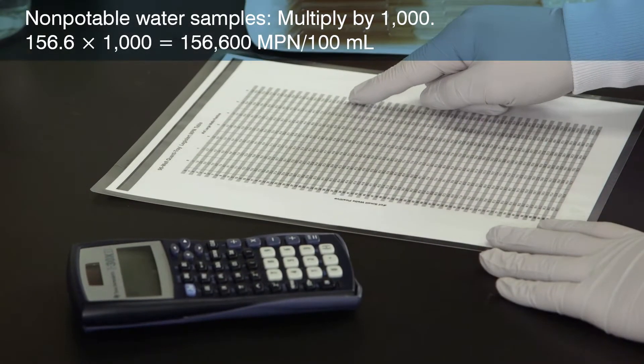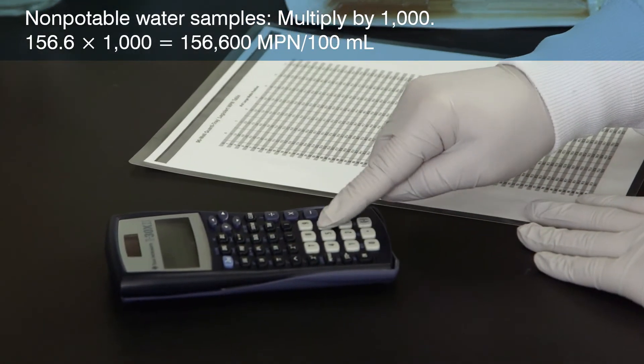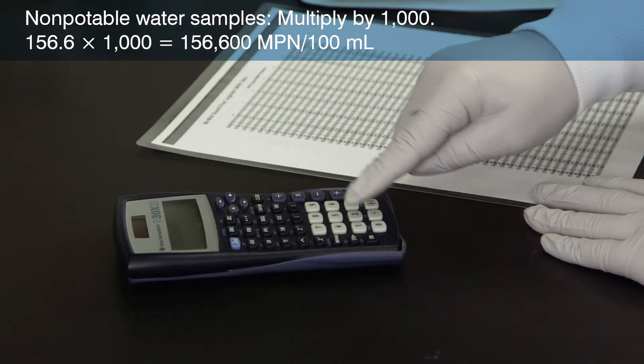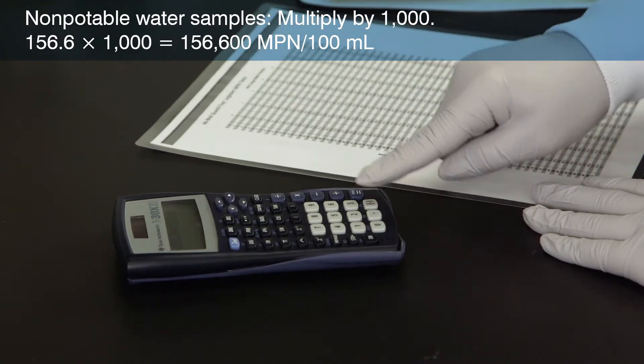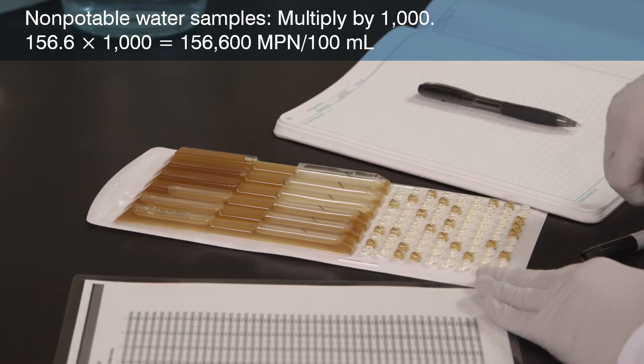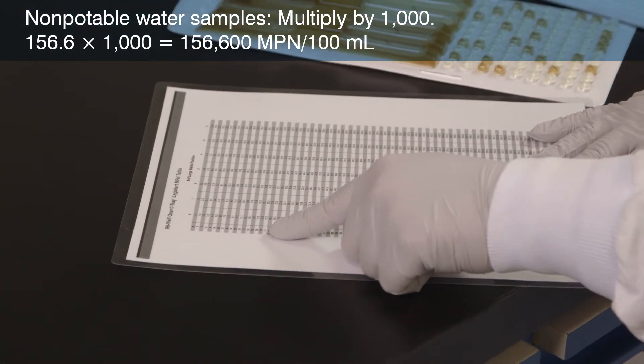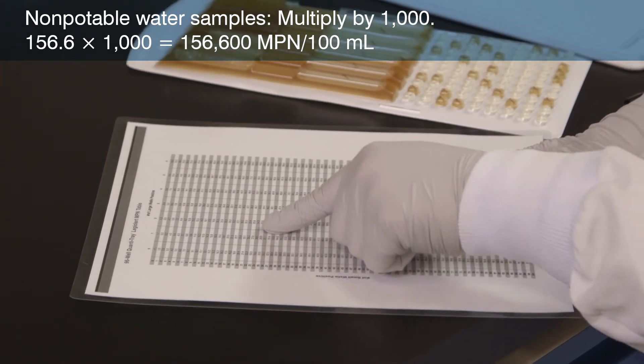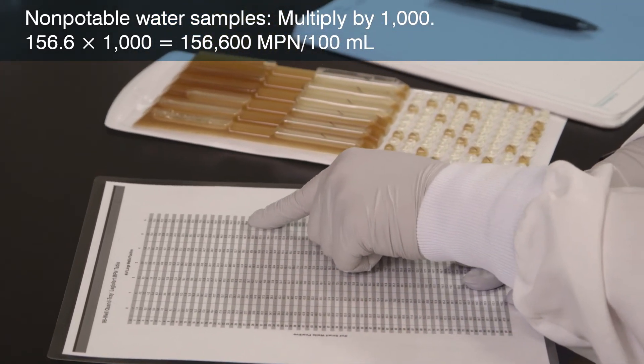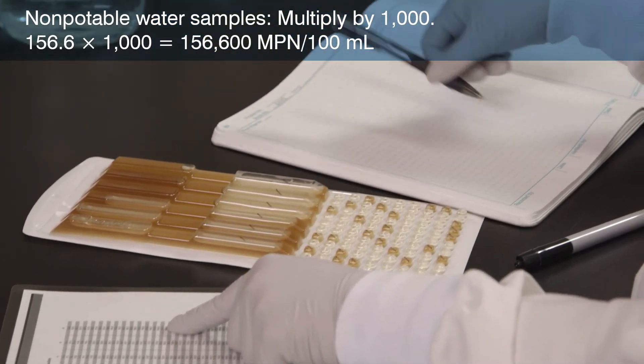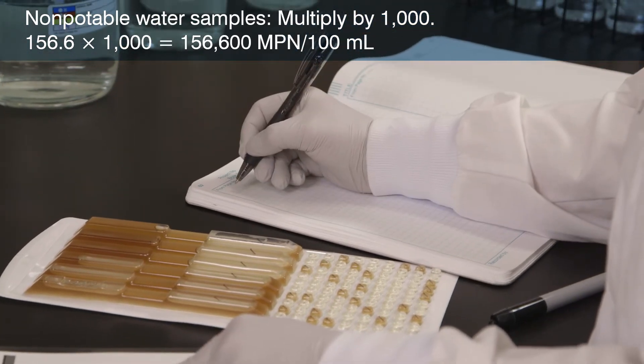For non-potable water samples, remember to multiply the MPN by 1,000 because you're using 0.1 ml of the original sample. The most probable number for this non-potable water sample is 156.6 multiplied by a dilution factor of 1,000 to achieve 156,600 per 100 ml.